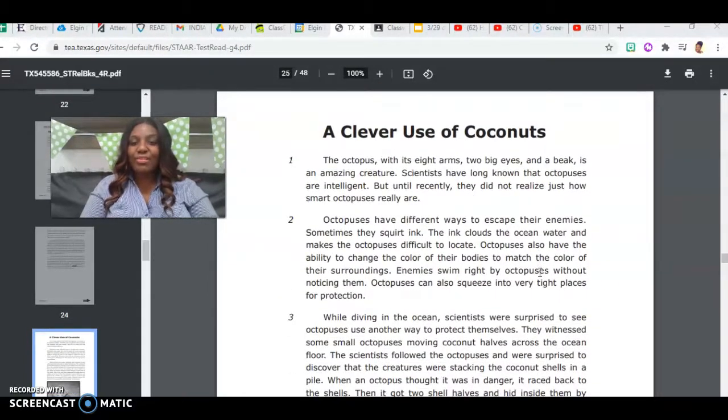A Clever Use of Coconuts. Notice there were no questions in between and the questions all come afterwards. We have two back-to-back passages. This is called paired passages. The octopus with its eight arms, two big eyes, and a beak is an amazing creature. Scientists have long known that octopuses are intelligent, but until recently they did not realize just how smart octopuses really are.